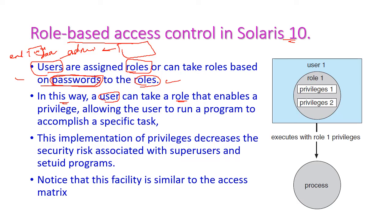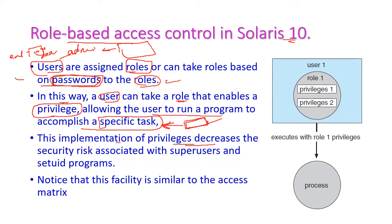A user can take a role that enables a privilege — privilege meaning a right — that allows the user to run a program to accomplish a specific task. Based on the current requirement, the corresponding right is given to that user. This implementation of privilege decreases the security risk, and the facility is similar to an access matrix.